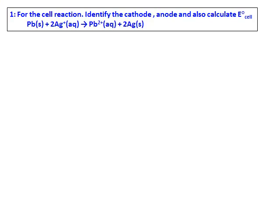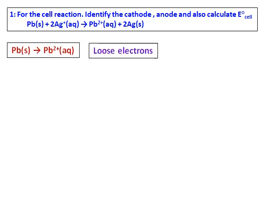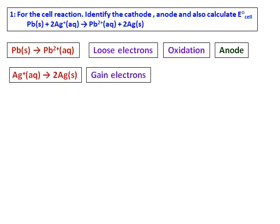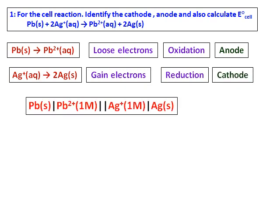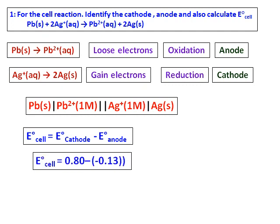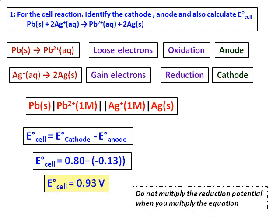For the next question — a cell involving Pb and silver — identify the cathode, anode, and calculate E_cell. Pb is converted to Pb²⁺, losing electrons, so it undergoes oxidation and acts as the anode. Ag⁺ gains electrons and acts as the cathode. The correct cell notation (anode first) is: Pb | Pb²⁺ || Ag⁺ | Ag. E_cell = E_cathode − E_anode. Using values from the standard reduction potential table, E_cell = 0.93 V, so the reaction is spontaneous.